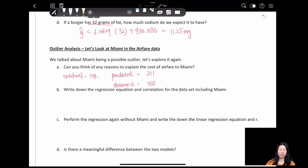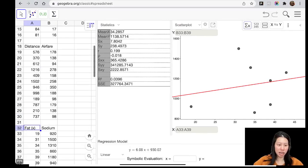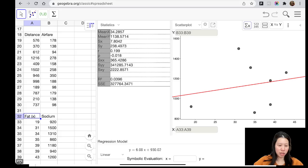So whatever reason, think about it by yourself. Write down the regression equation and correlation for the data set including Miami, which is our original one. Okay, so perform the regression again without Miami and write down the linear regression. What we can do is go back to our data set - this one is the Miami one - we're going to delete this one, delete the object, and let's generate a new regression model.